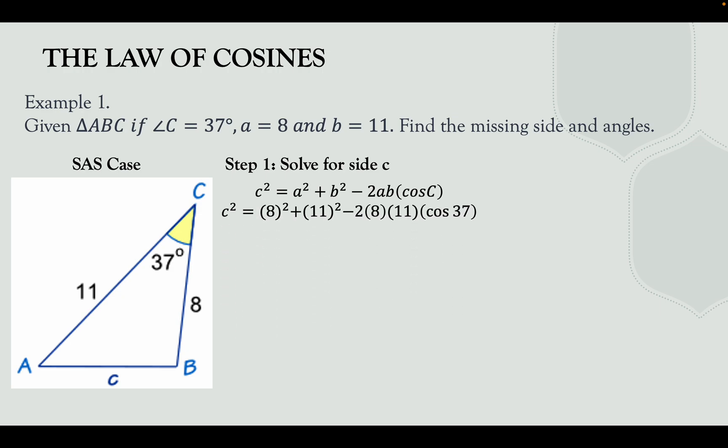Substituting the given: c² = 8² + 11² − 2(8)(11)·cos 37°. Simplifying: c² = 64 + 121 − 140.56, which gives c² = 44.4. Taking the square root of both sides, c = 6.67. So side c is 6.67.